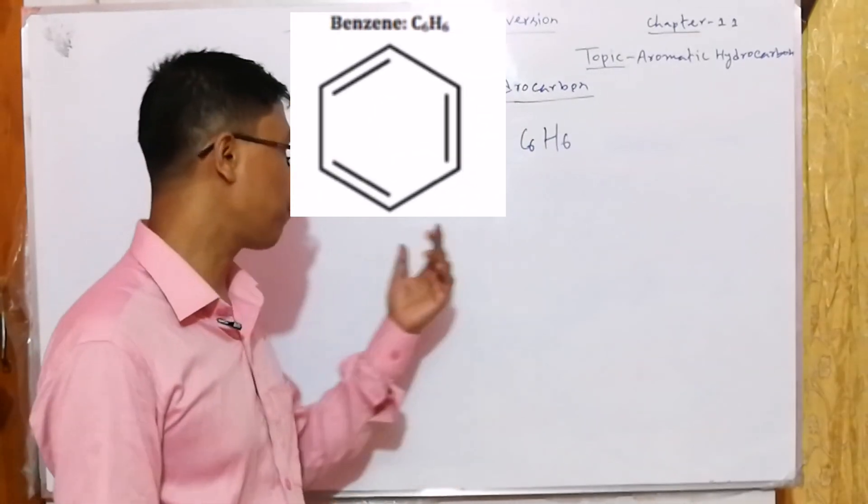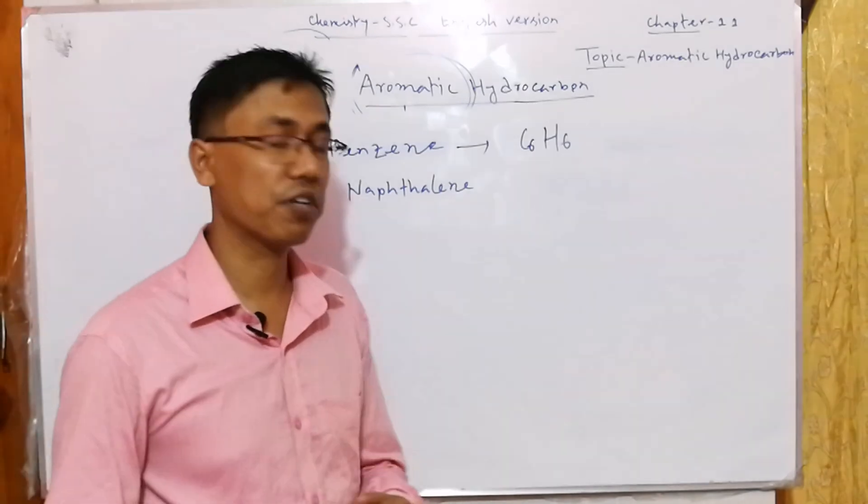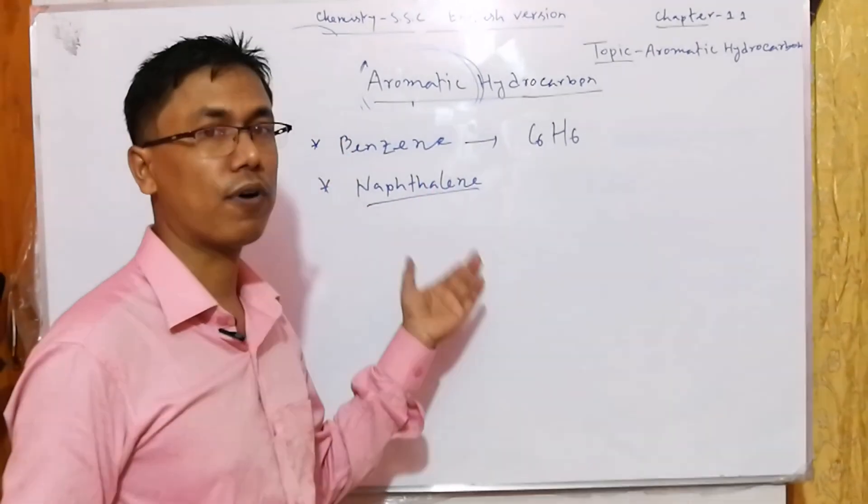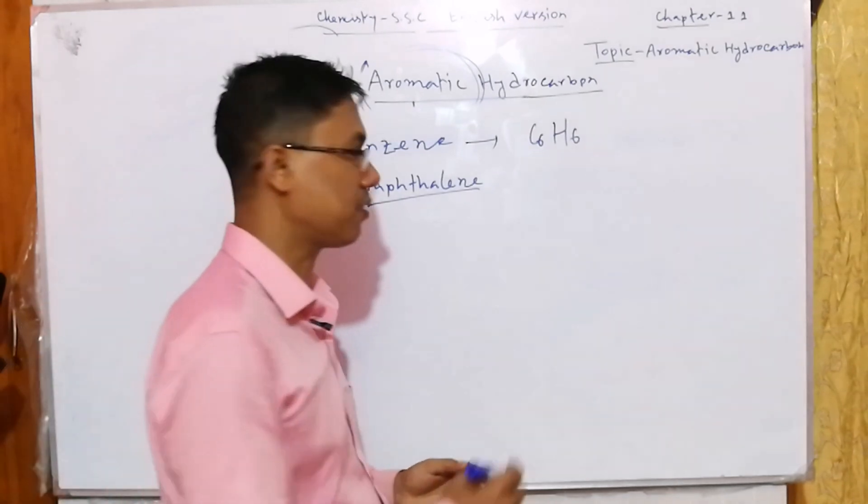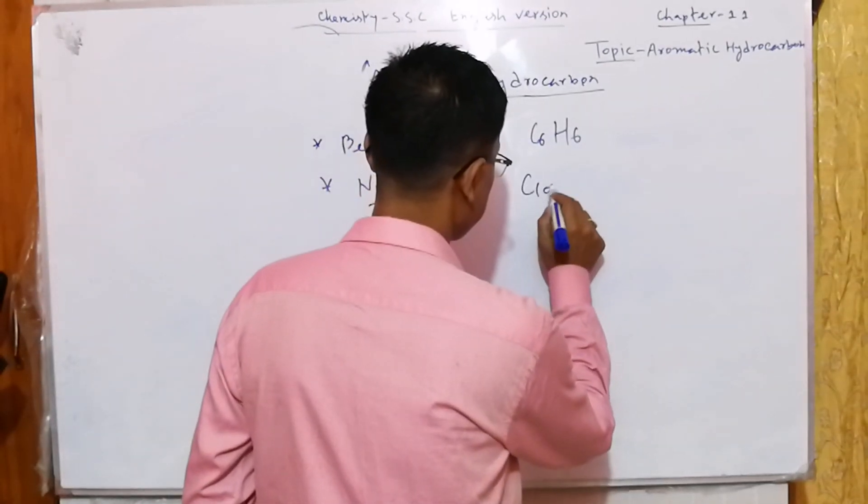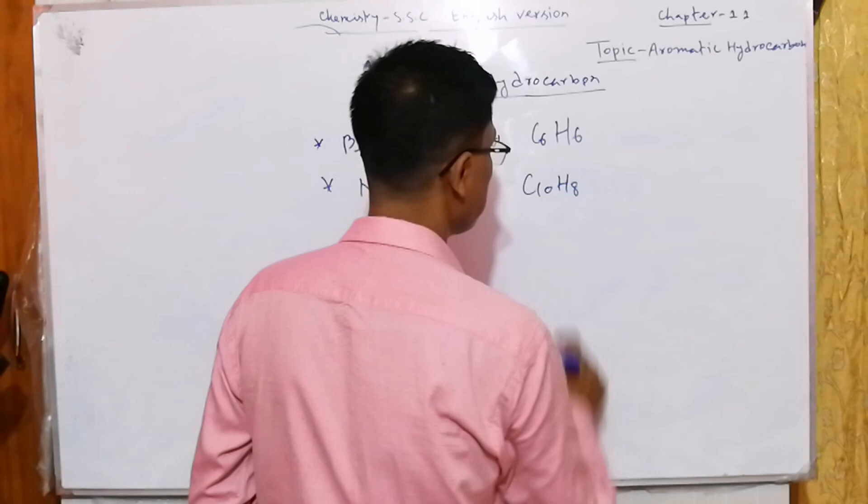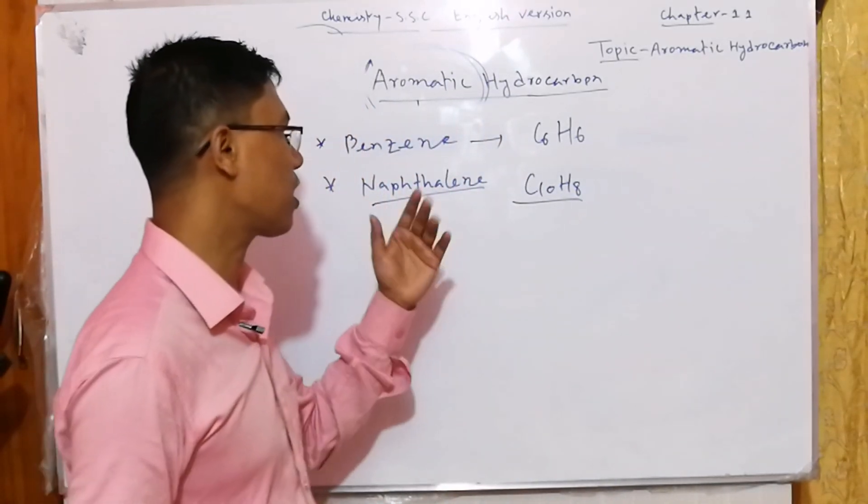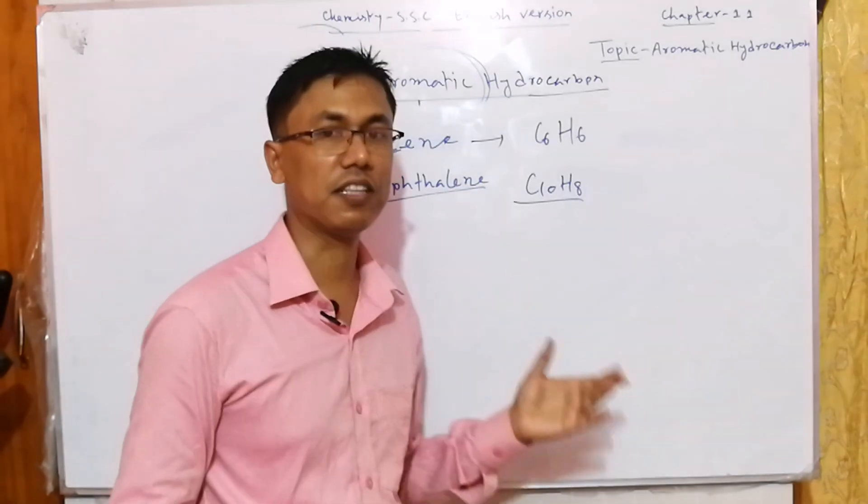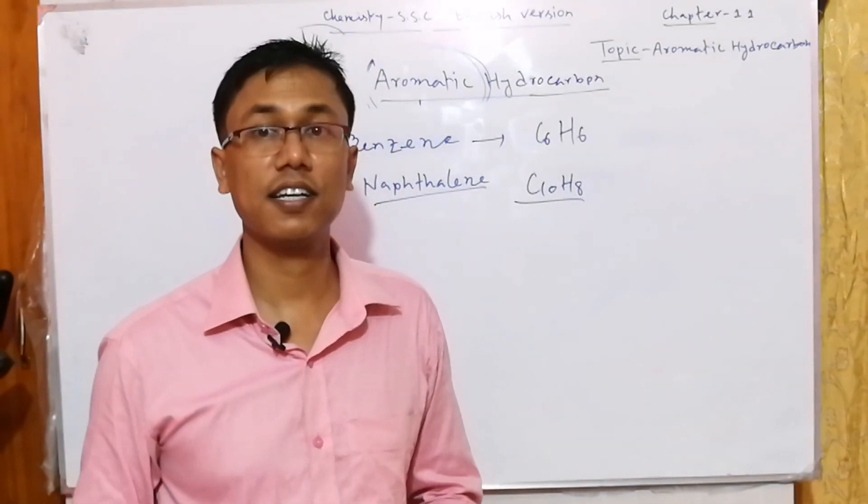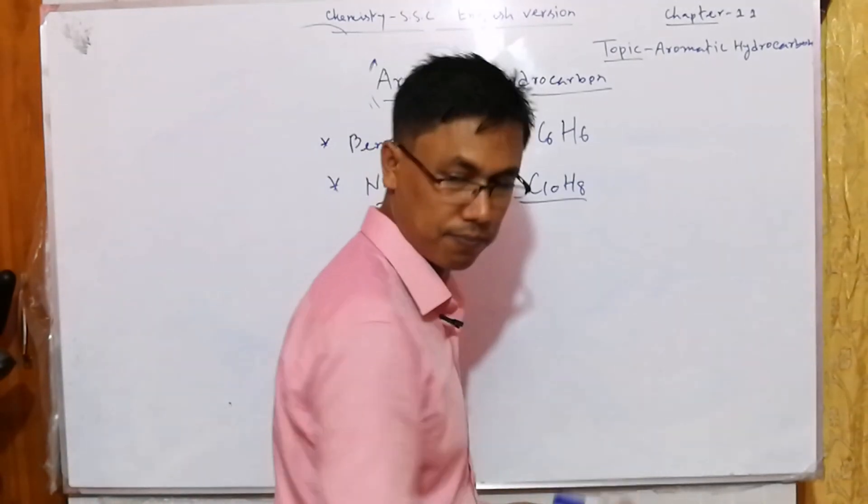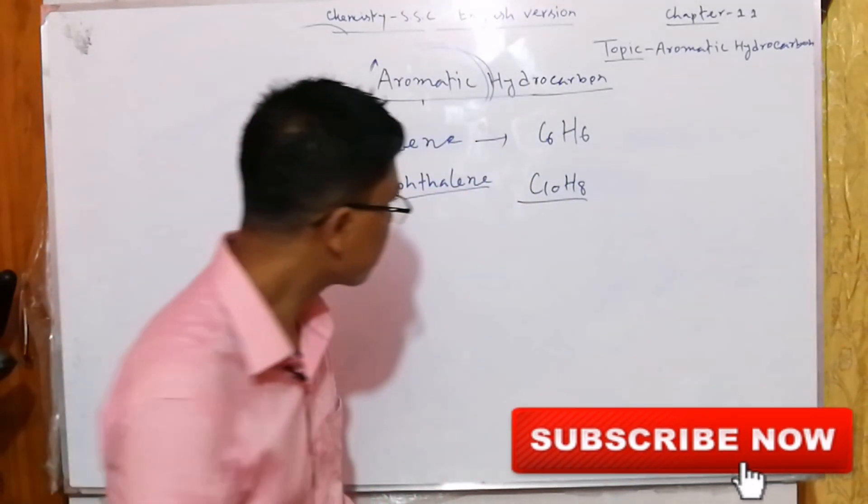Another example of aromatic hydrocarbons is naphthalene. The chemical formula of naphthalene is C10H8. But in the structural formula of naphthalene, there are two benzene rings connected together. So we can show it as the following structure.